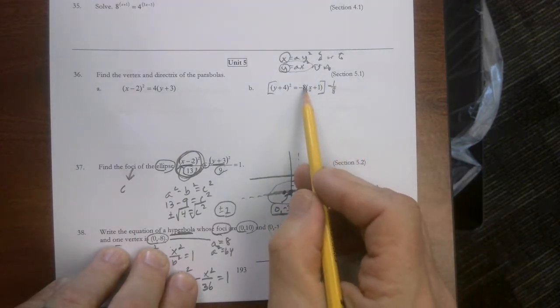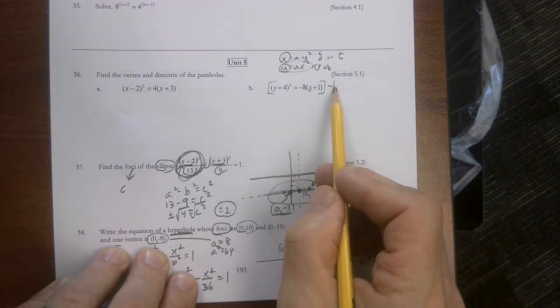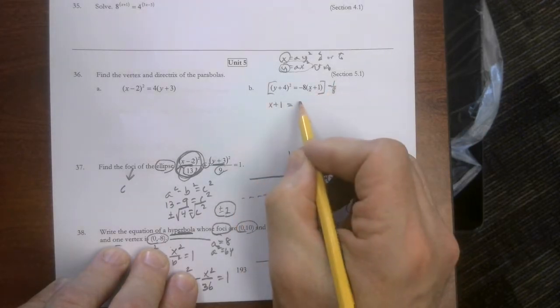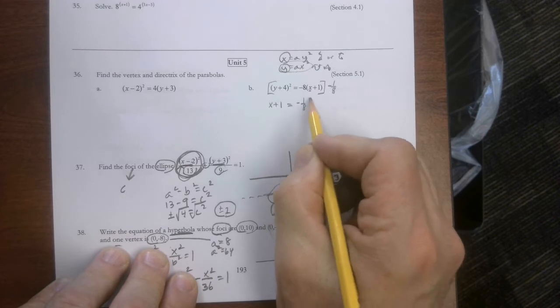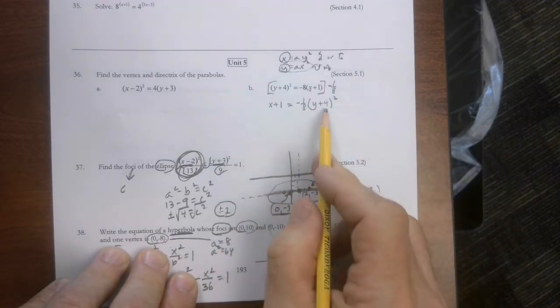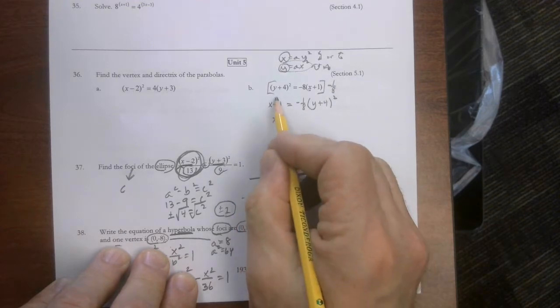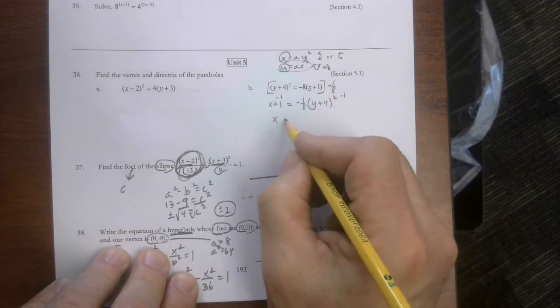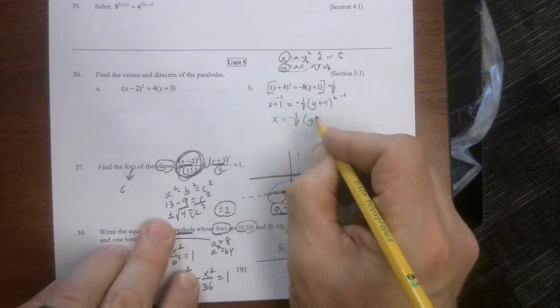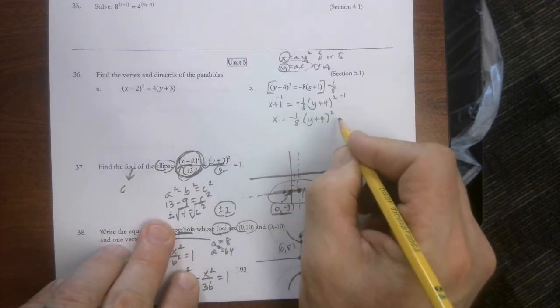So I'm going to do two things at once. I'm going to get rid of this. I'm multiplying by negative 1/8, and I'm going to flip it. So it equals negative 1/8 times y plus 4 squared. Now back in Algebra 2, we would stop there. But if we subtract 1 from both sides, we'd get x equals negative 1/8 y plus 4 squared minus 1.